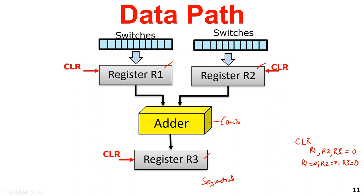Whenever we want to load something into R1 and R2, load1 needs to be enabled. Load1 may be connected to both registers from the same source. Load1 must be enabled so whatever input coming from the switches enters registers R1 and R2. Both load must be enabled and clock positive edge. In general, a value enters a register if the load signal is 1 and the clock is 1.